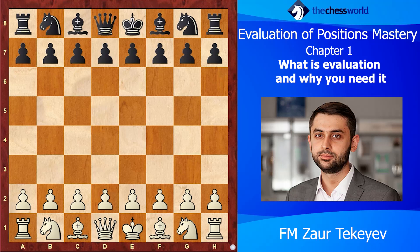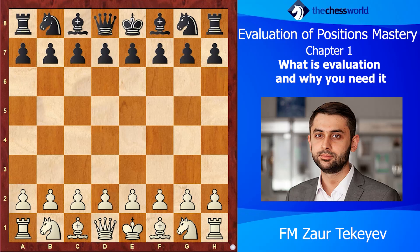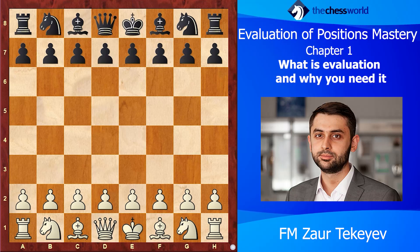To find the right plan, you first should evaluate the position. By evaluation I don't mean computer evaluation like plus one or minus three — black is winning, white is lost, or it's a draw. We evaluate the position and it's important to know who is better, but we also need to think about the reasons why someone is better. That's even more important — to know why it is so.